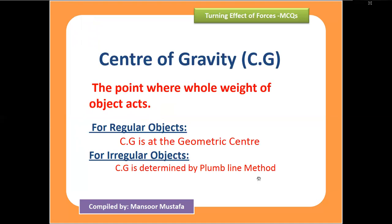The second part of this chapter is the center of gravity. The center of gravity is the point at which the whole weight of the object acts. For regular objects, the center of gravity is at the geometric center — for squares, triangles, circles, etc. Center of gravity is also called center of mass. For irregular objects, we use the plumb line method to determine it.